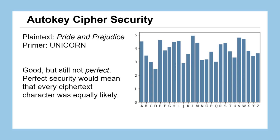Looking at auto-key security for frequency analysis: using the entire text of Pride and Prejudice with the priming word 'unicorn', everything is between about 2.5% and 4.5% — nothing above 5%. It does a great job disguising character frequencies better than any standard Vigenère cipher. But it's not quite at the gold standard — if perfectly uniform, all bars would be about 3.8% (1 divided by 26). We're close, but not there yet.